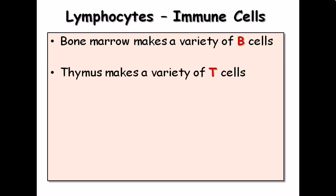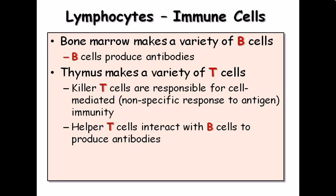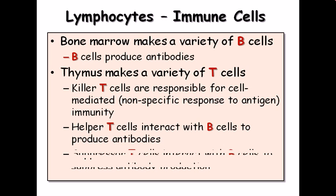Lymphocytes are important immune cells. Bone marrow produces B cells, while the thymus produces T cells. B cells produce antibodies. T cells are of two types: killer T cells, which are responsible for cell-mediated cytotoxic immunity — they hunt and kill harmful organisms like bacteria, fungi, and viruses — and helper T cells, which interact with B cells to stimulate antibody production.